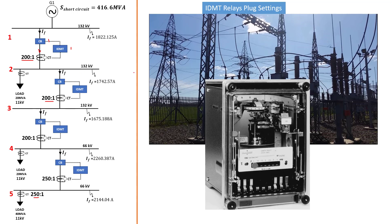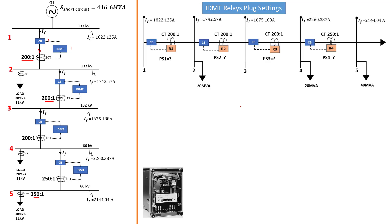Reconstructing the following diagram so that we can calculate our IDMT relay plug settings, we now have our five bus bar arrangement laid out in a different way to facilitate the calculation. We're going to work from the lower relays to the upstream relays. Relay number four will look out at the fault available on bus bar five; relay three is going to look out for a fault on bus bar four and bus bar five; relay two will look out for the fault on bus bar three, four, and five — and so forth. This is why it's better to lay them out like this so you can see clearly.